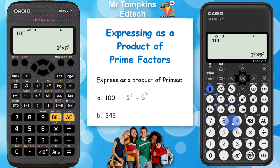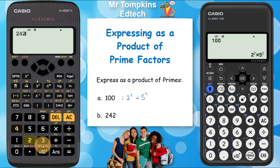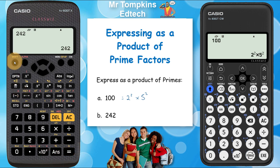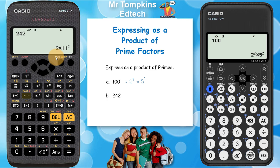Back to the old calculator — to find 242 as a product of its primes, type in 242 and press equals, then press shift and then FACT. That gives 2 times 11 squared.